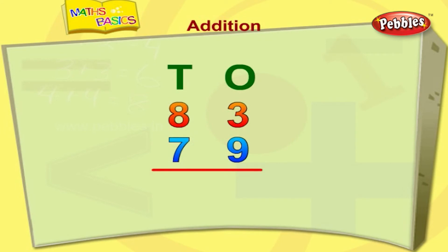Let me add the ones column first. 3 plus 9 is equal to 12. So, 2 comes down. Now, 1 comes to the tenths column.